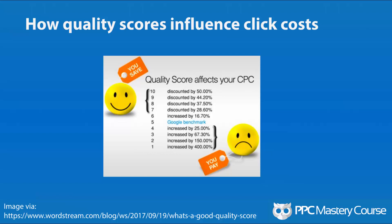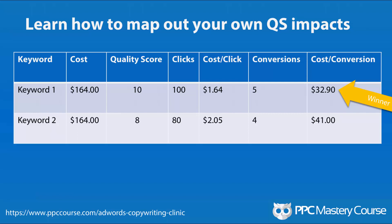Quality scores are not always a transparent thing with Google AdWords and it's difficult to really understand what's going on with them. I did create a video to show you how you can map out your own quality scores and see how it impacts things like cost per conversion, the ad copy you write, and make an informed decision as to whether you should focus on quality scores, click-through rates, conversions, and how much faith you should put into all this stuff.